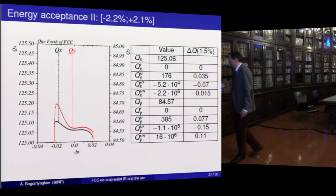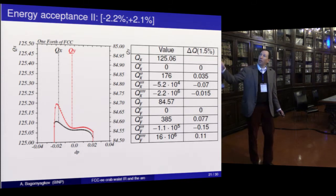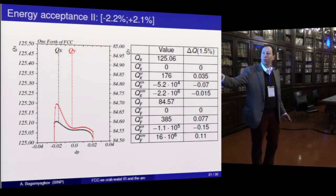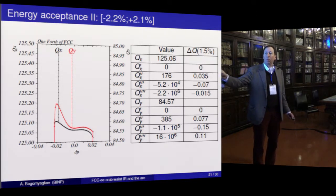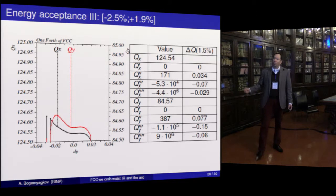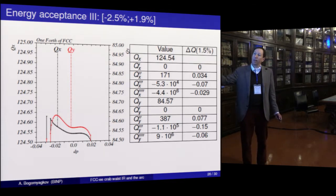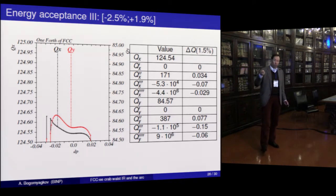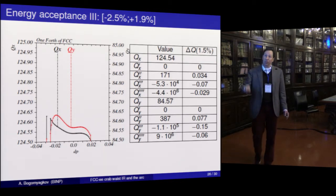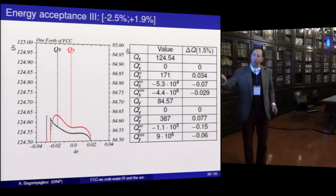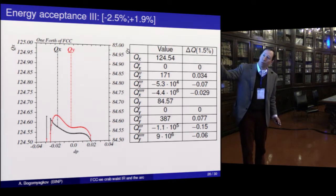The energy acceptance: Anton has used two working points. At his first working point of 0.6, he gets a nice momentum acceptance of a bit more than plus or minus 2%. This is just a tune scan. At his second working point of 0.54, again he gets a bit more than 2%. So this is already promising. Of course, this is not sufficient — we need to also see the dynamic aperture plots. But already from this point, this is promising. I remind you that in the CERN design, the first approach, the useful region was much smaller.